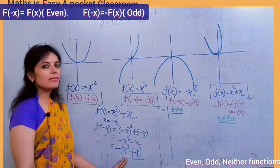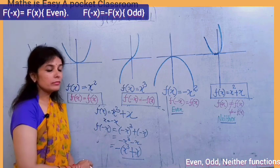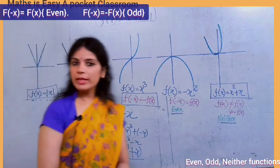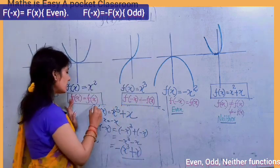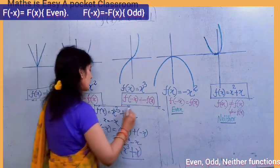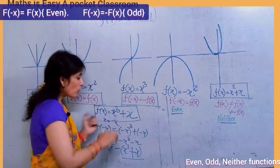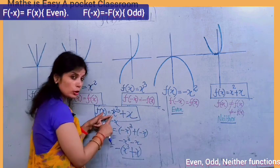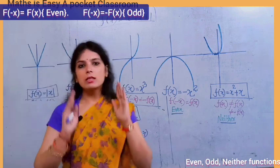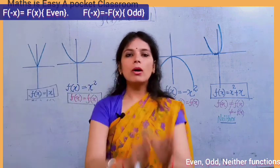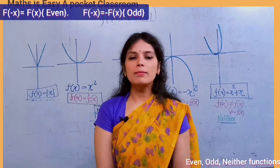So we got the original function back but with a negative sign, meaning f(−x) = −f(x). Therefore this function is an odd function. By the way, there is another way to check: this function is odd because x³ is an odd function and x is also an odd function, and the sum of two odd functions is again an odd function.